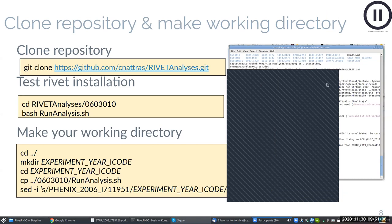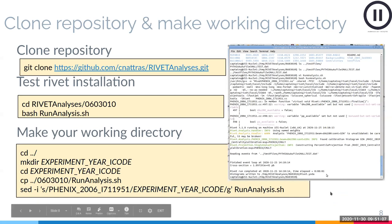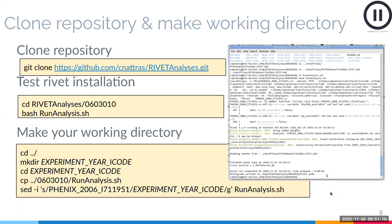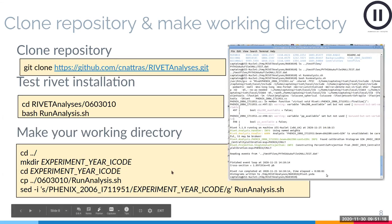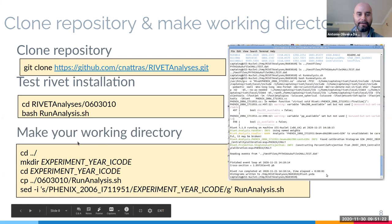Gabor joined the waiting room but is just observing, not working along. Proceeding: the next step after creating your working directory is to create a generic RIVET analysis using 'rivet-mkanalysis EXPERIMENT_YEAR_ICODE', where the code is the InspireHEP number. This will create three or four files depending on whether your data is already on HEPdata.